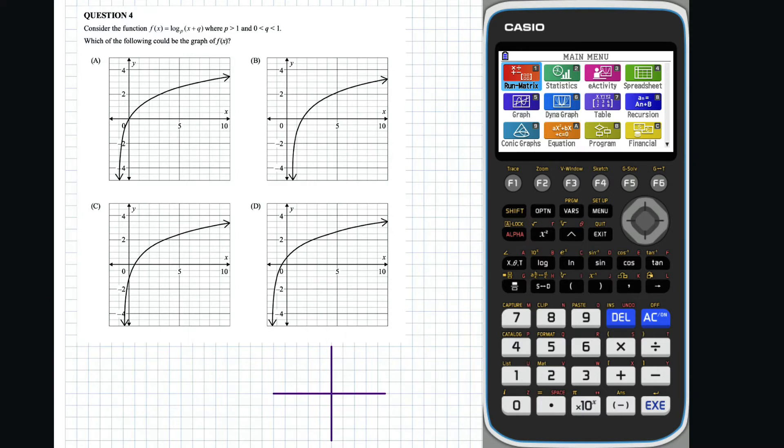Question 4: F of x is a translation q units of the function g of x, where g of x is equal to log base p of x. The graph of g of x with p greater than 1 will look like this, where we know that the x-intercept is equal to 1.